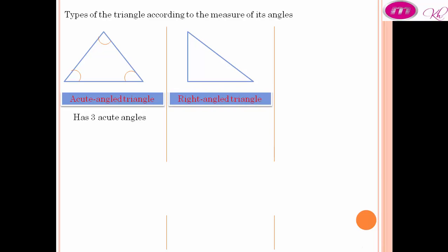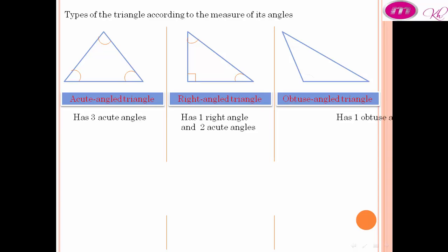Right angled triangle has 1 right angle and 2 acute angles. Obtuse angled triangle has 1 obtuse angle and 2 acute angles.